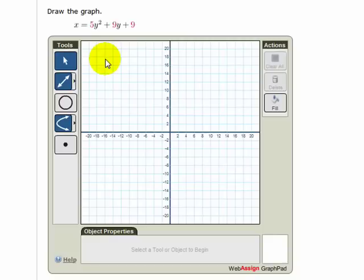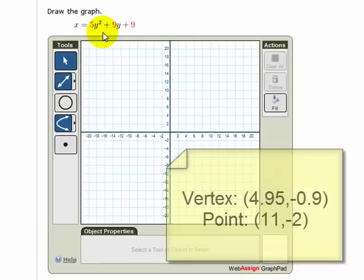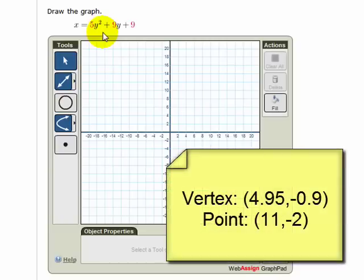Now let's do an example that's a bit more difficult to graph. This is a parabola that opens to the right. From some previous calculations, I've discovered the vertex is at 4.95, negative 0.9, and I've found another point on the parabola is at 11, negative 2.